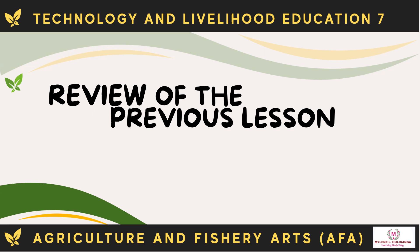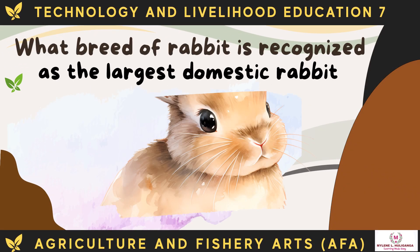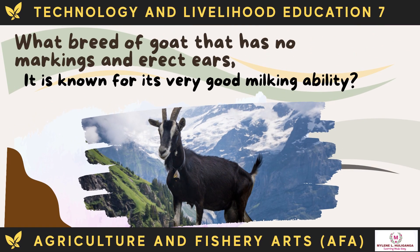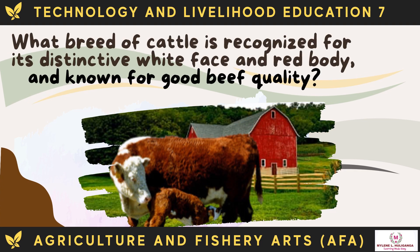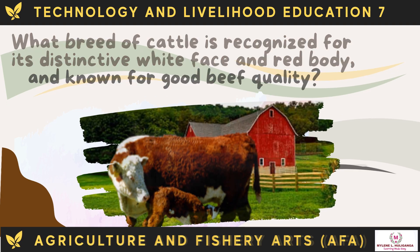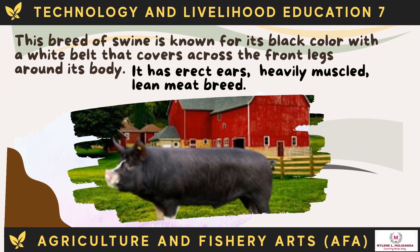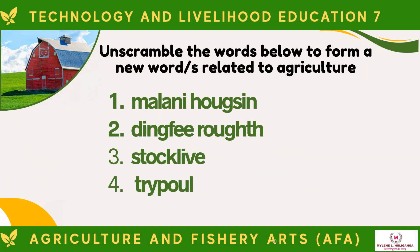Review of the previous lesson: What breed of rabbit is recognized as the largest domestic rabbit? What breed of goat has no markings and erect ears and is known for its very good milking ability? What breed of cattle is recognized for its distinctive white face and red body and known for good beef quality? What breed of swine is known for its black color with a white belt across the front legs, erect ears, and heavily muscled lean meat? Unscramble the words below to form a new word or words related to agriculture.